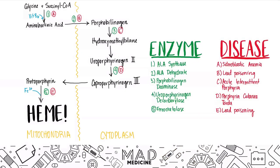This is the pathway that heme is produced. This is something we discussed in our previous video, so go ahead and check that out. In this video we're going to be talking about acute intermittent porphyria. I highly recommend before you go through this lecture that you go through the heme video and try to understand all the steps taken for production of heme.